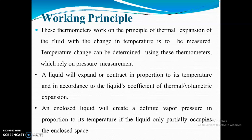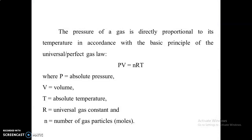For pressure measurement, we use the Bourdon tube. The liquid will expand or contract in proportion to its temperature in accordance with the coefficient of thermal expansion. An enclosed liquid creates a definite vapor pressure in proportion to temperature. The pressure of gas is directly proportional to temperature, following the basic gas law: PV = nRT, where P is absolute pressure, V is volume, T is absolute temperature, R is the universal gas constant, and n is the number of gas particles.